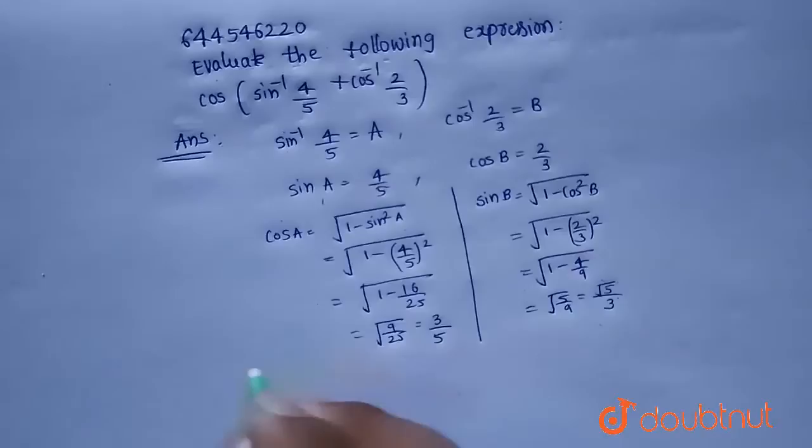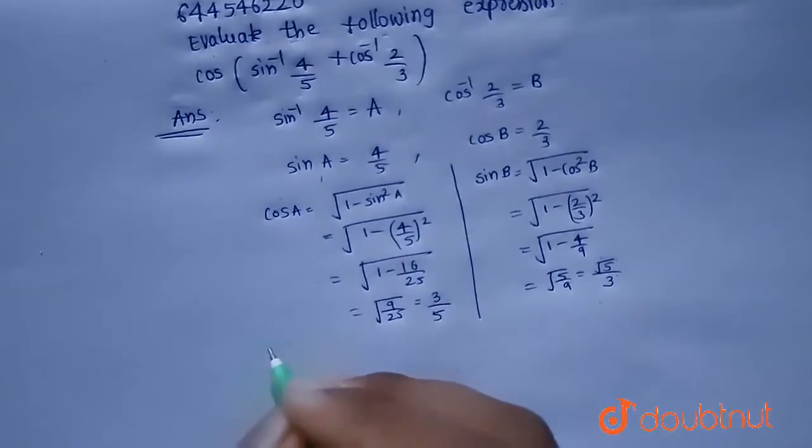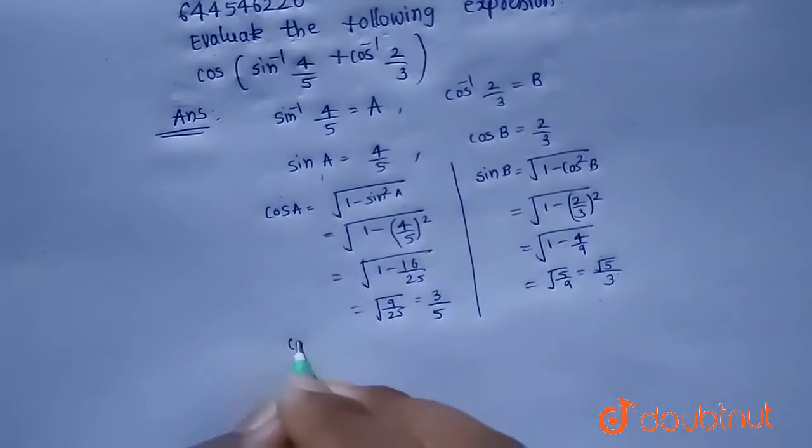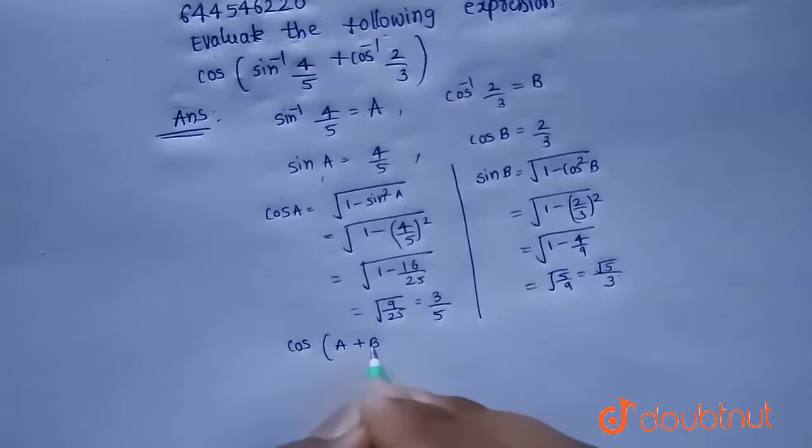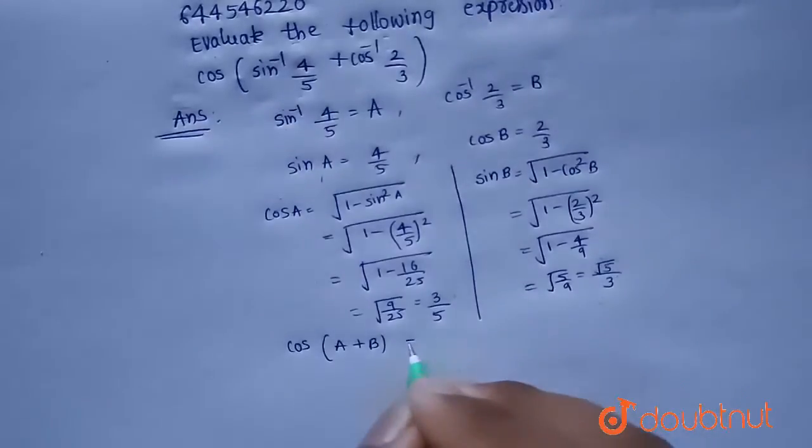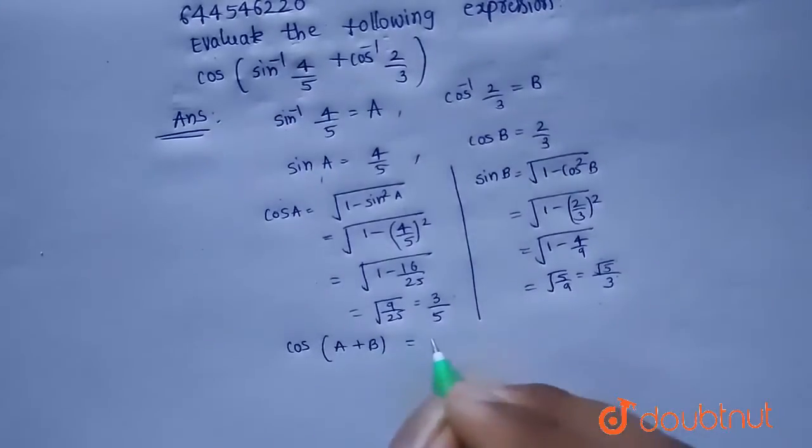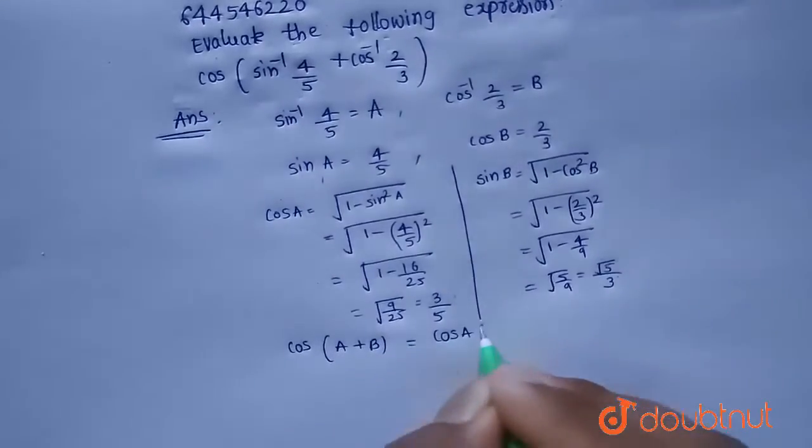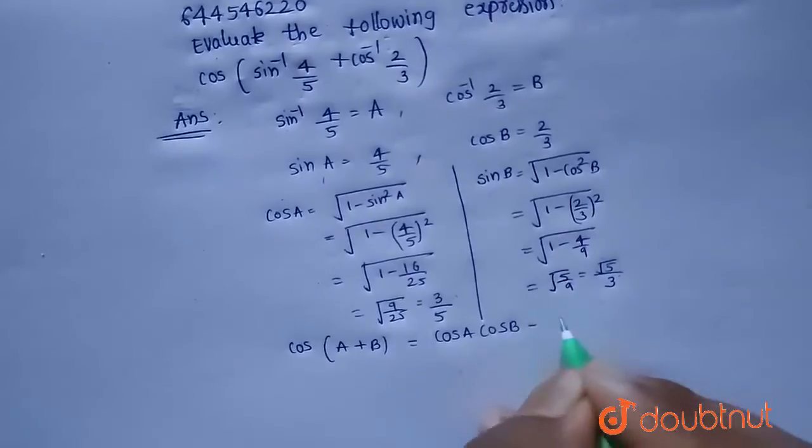Now we are asked to find the value of cos of a plus b, because sin inverse 4 by 5 is a and cos inverse 2 by 3 is b. Now we know the formula of cos a plus b, that is equals to cos a cos b minus sin a sin b.